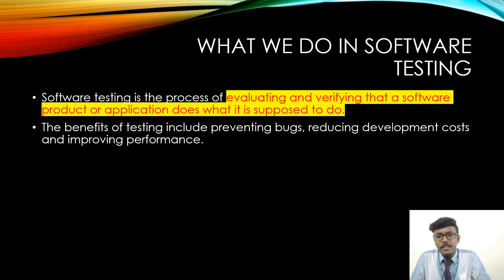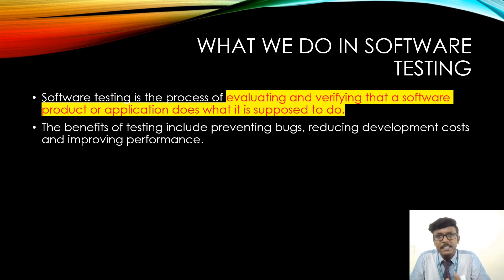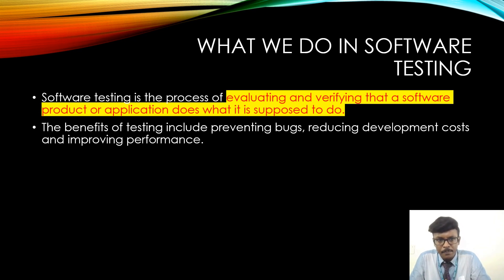What do we do in software testing? Software testing is the process of evaluating and verifying that a software product or application does what it is supposed to do. We create software for a specific purpose, and we must verify and evaluate whether that purpose is fulfilled. The benefits of testing include preventing defects, reducing development costs, and improving performance.